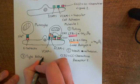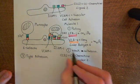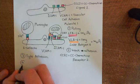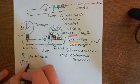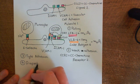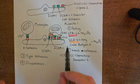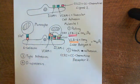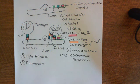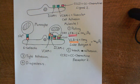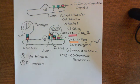Diapedesis of the monocyte then follows: it deforms to squeeze through the gap between endothelial cells, with PECAM-1 cell adhesion molecules on the monocyte interacting with PECAM-1 on the endothelial cell lining the gap. Once in the interstitial space, the monocyte differentiates into a macrophage, which phagocytoses and digests the invading pathogen, clearing the infection.